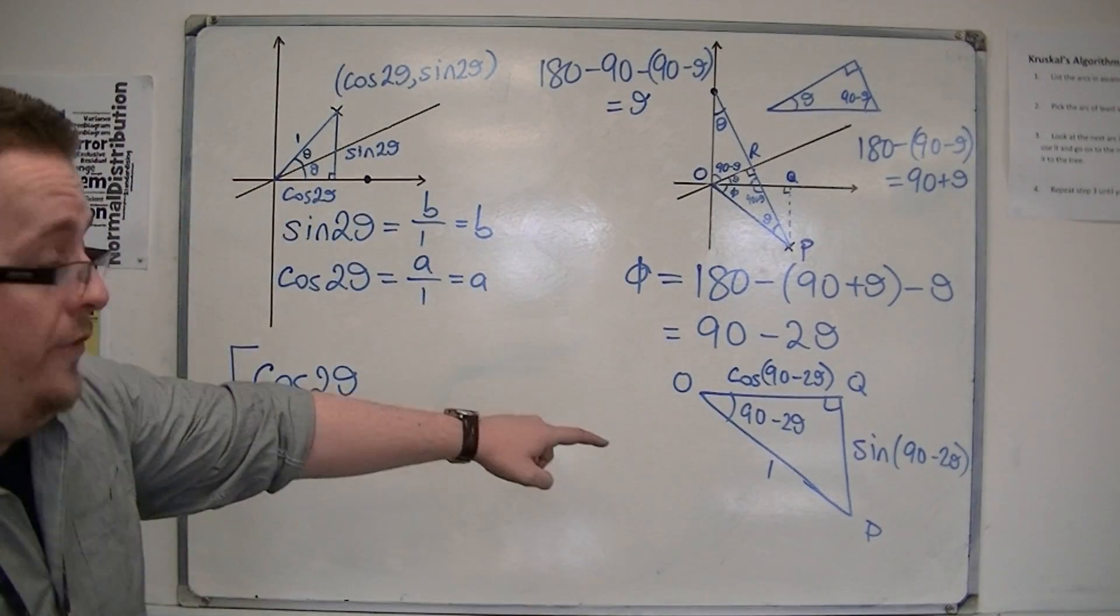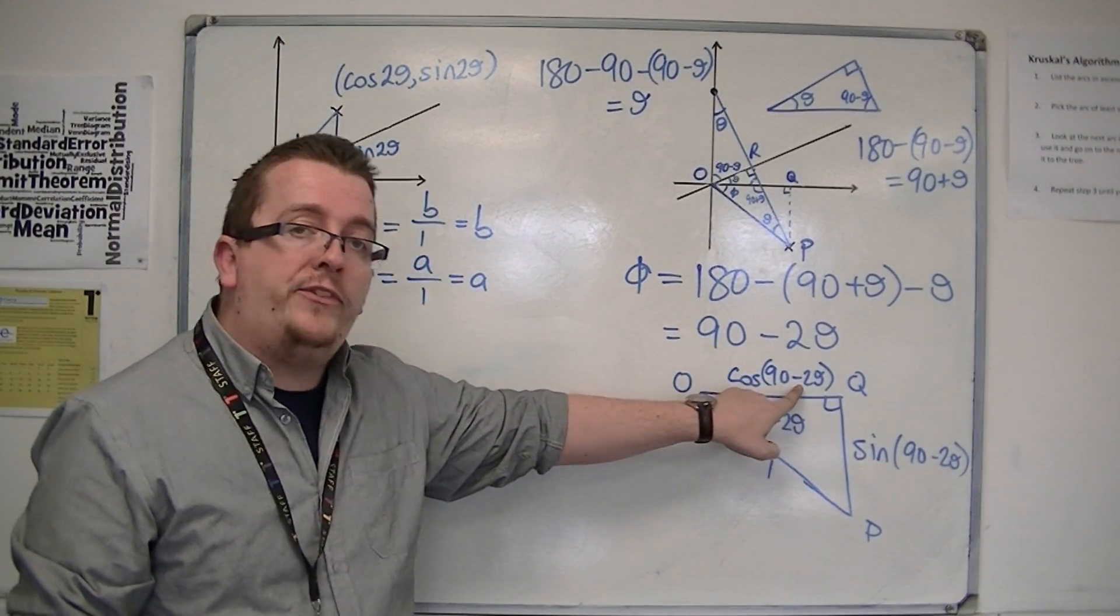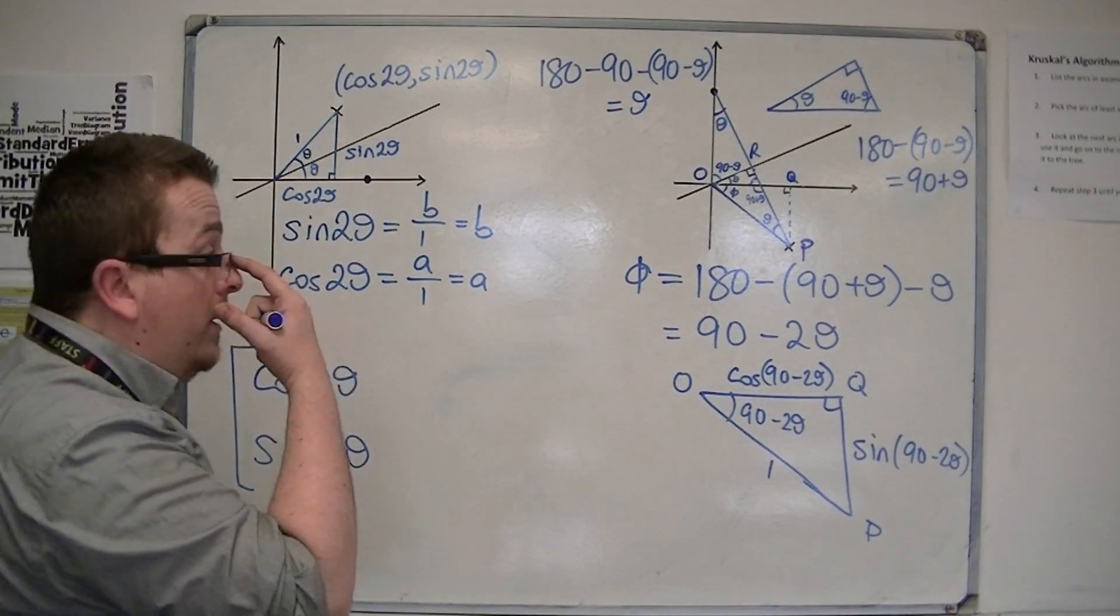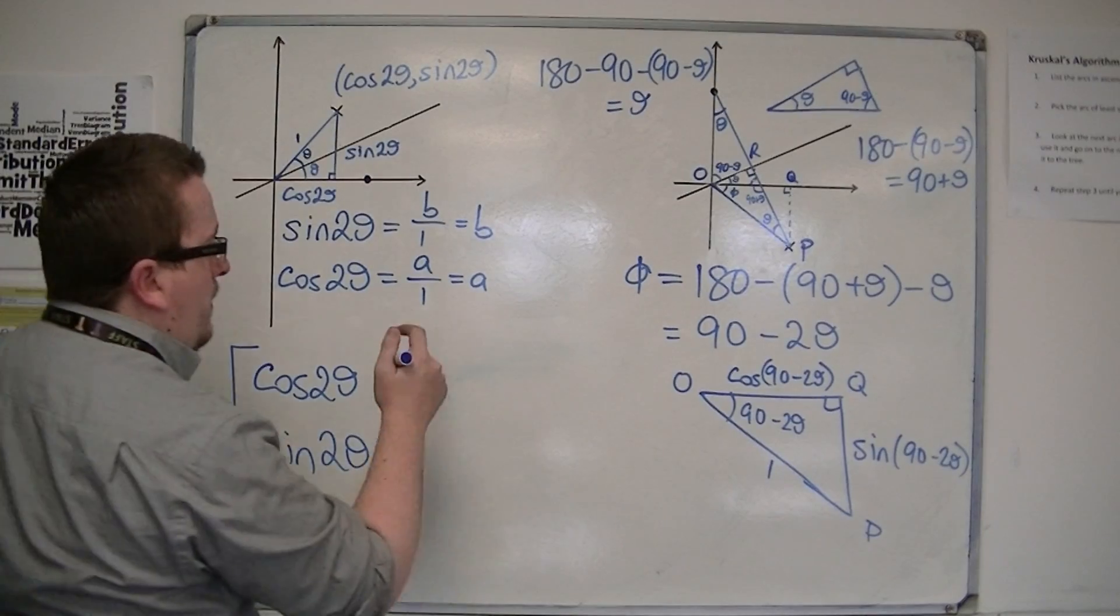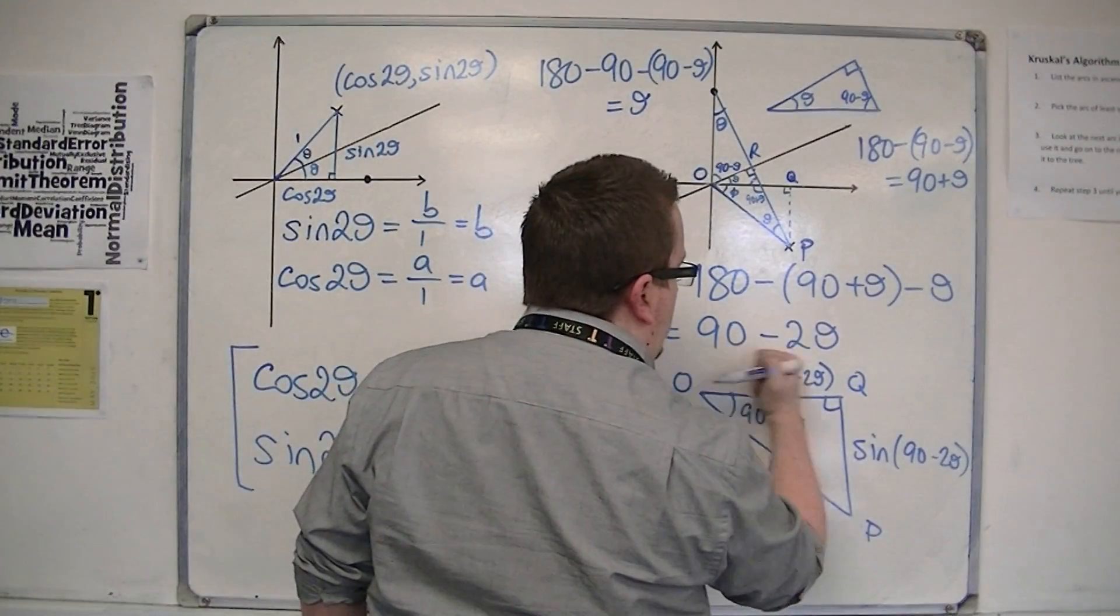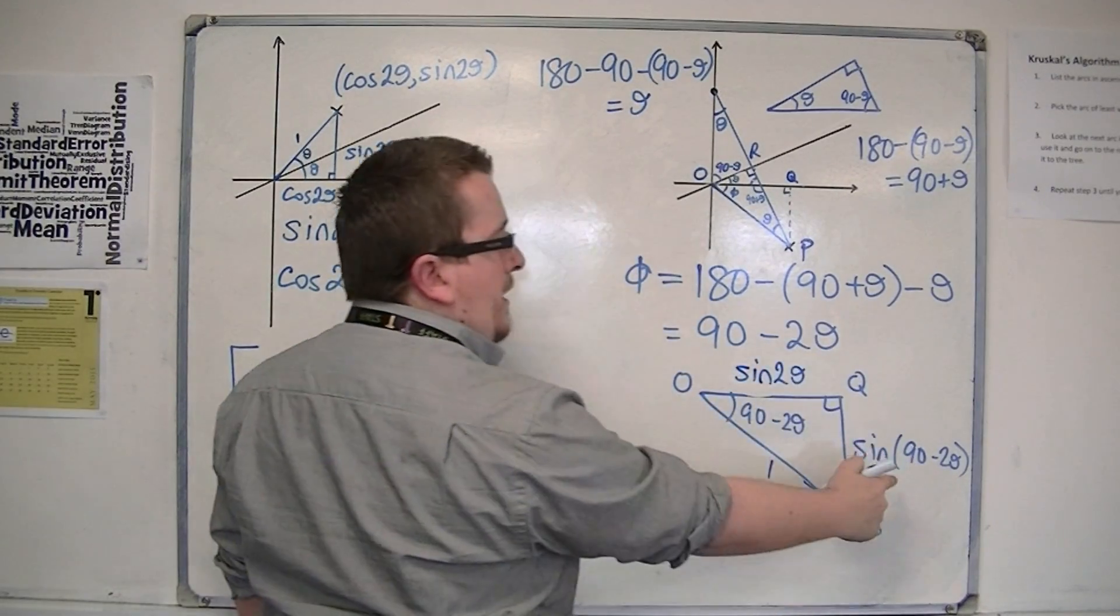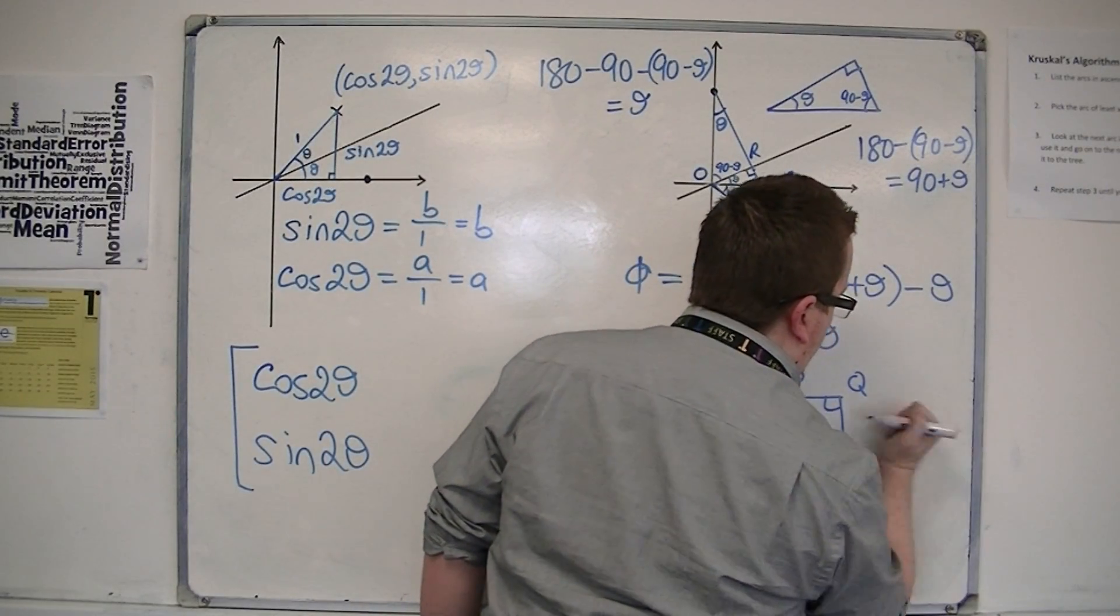So cos of 90 minus 2 theta is exactly the same as sine of 2 theta, it's just a translation by that 90 degrees. So cos of 90 minus 2 theta is actually just sine of 2 theta, and sine of 90 minus 2 theta is just cos of 2 theta.